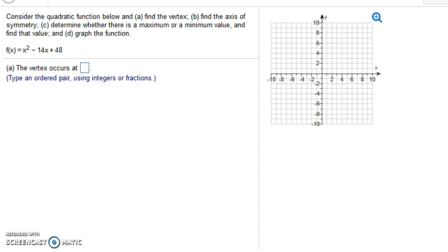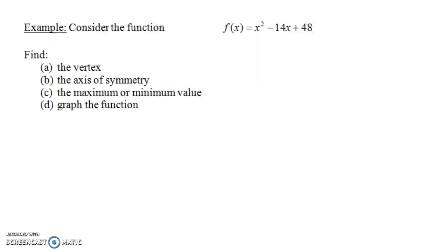Let's look at this problem here. Consider the quadratic function below. So f(x) equals x squared minus 14x plus 48. Find the vertex. Find the axis of symmetry. Determine whether there's a maximum or minimum value. And find that value. And then graph the function.